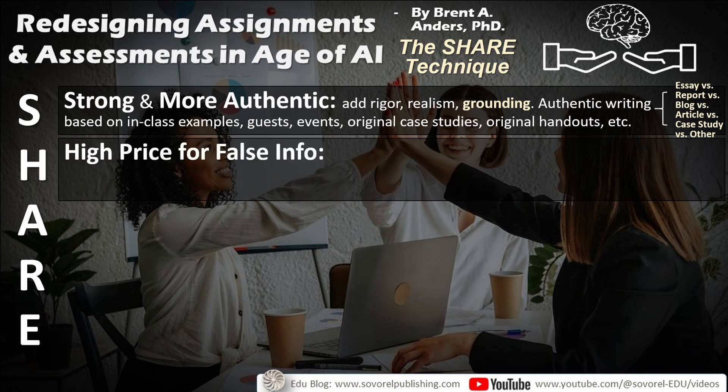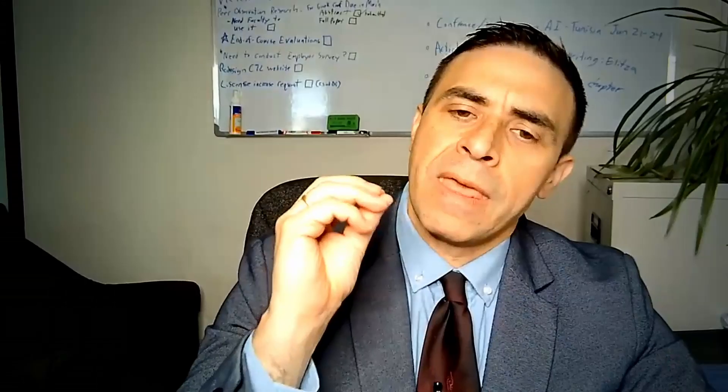H stands for High Price for False Information. This means telling students there will be more points — much more points — taken off for illogical, made-up information and hallucinations, which is the term for an AI making up information. You tell them ahead of time and put it within the rubric: if there are made-up quotes, made-up facts, incorrect citations, and incorrect references, points will be taken away — far more than in the past.